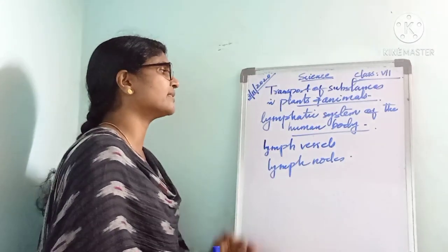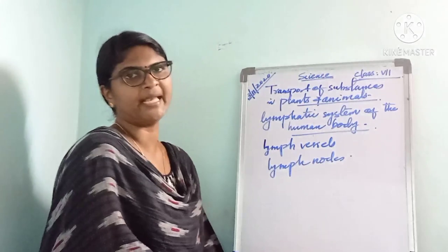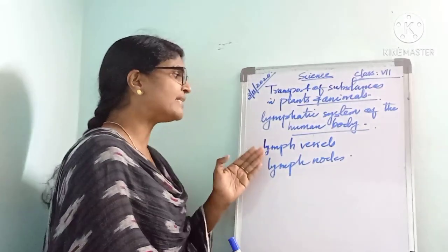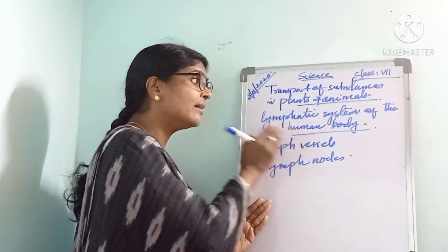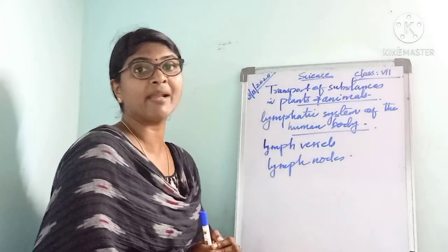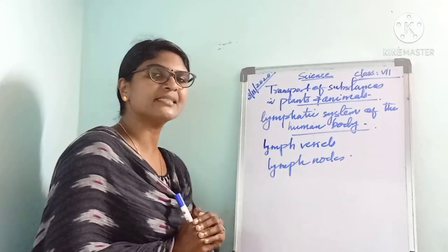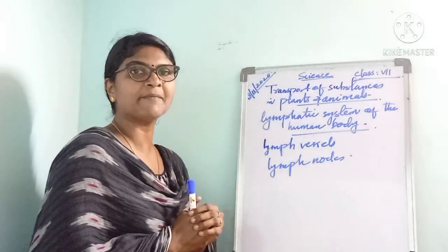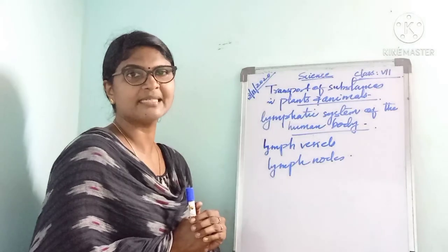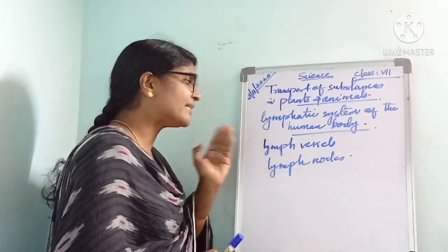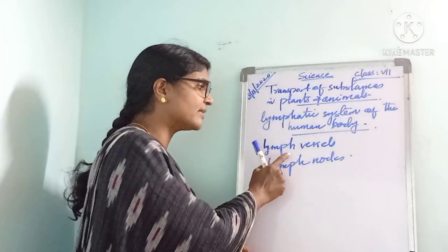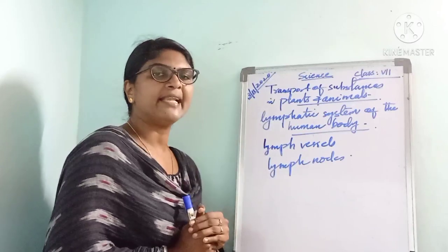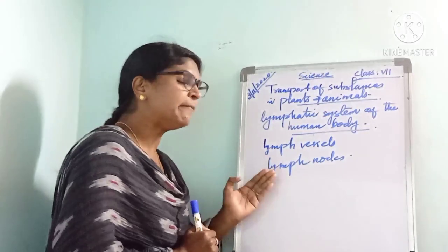Today's class we are going to discuss about the lymphatic system of the human body. The lymphatic system is actually a subsystem of the circulatory system. The lymphatic system consists of lymph vessels and lymph nodes.